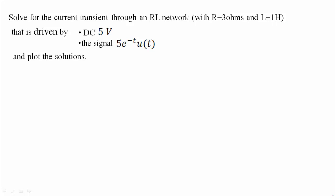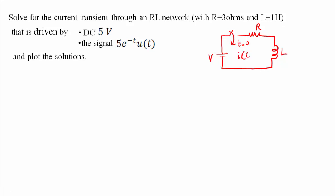I already know that the RL network is basically a switched voltage source supply with resistance R and inductance L. At T equal to 0, we perform transient analysis. Here V is only a DC voltage, and I of t is the current we need to find.